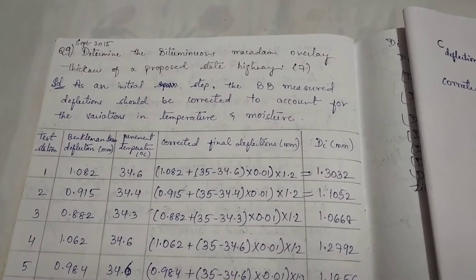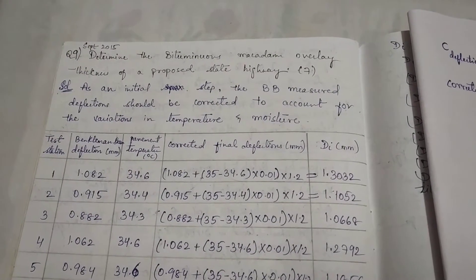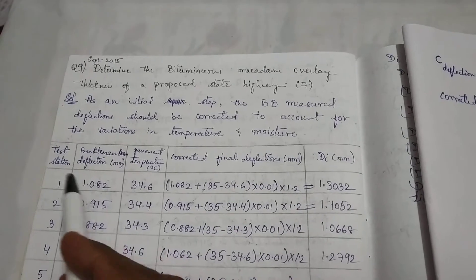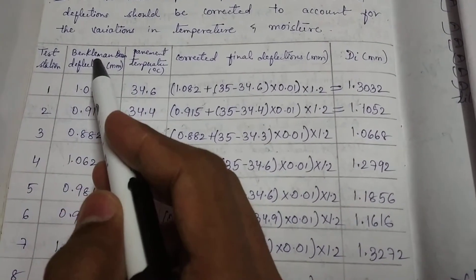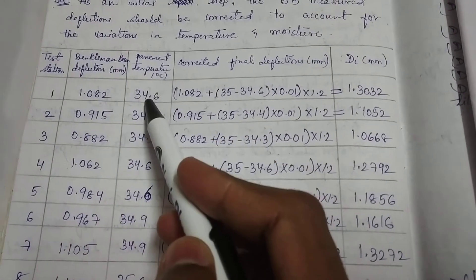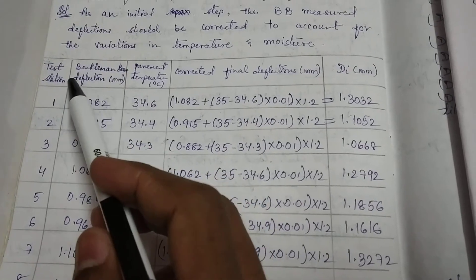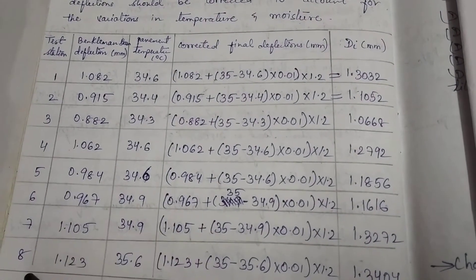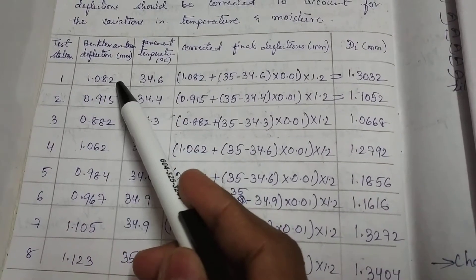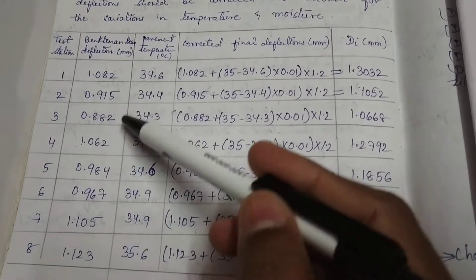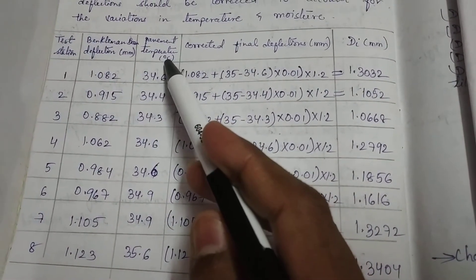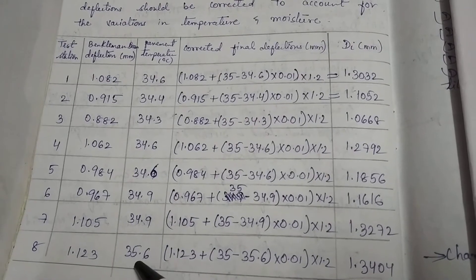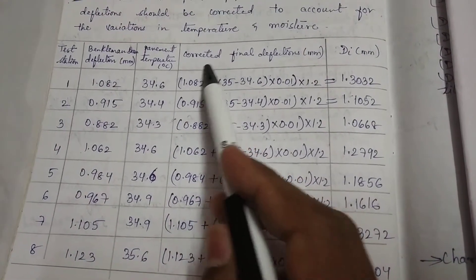In today's video we will learn how to calculate the thickness of a bituminous macadam overlay for a proposed state highway, given values for test station, Benkelman Beam deflection in mm, and pavement temperature. We have values for test stations one through eight, Benkelman Beam deflection in mm, and pavement temperature in degrees centigrade — for the first value it is 34.6 degrees — up to eight stations.